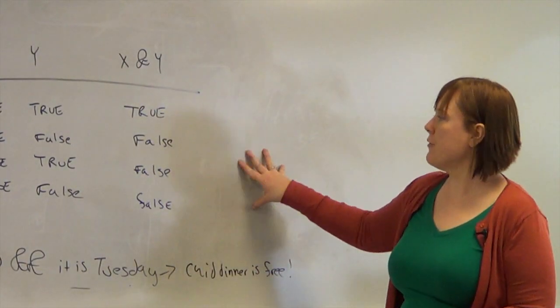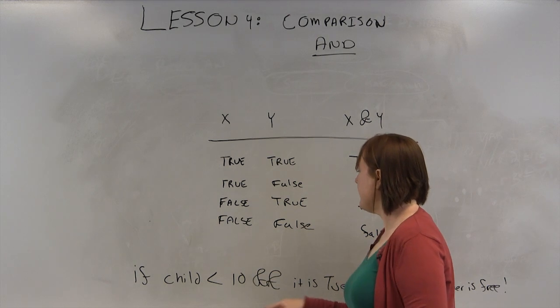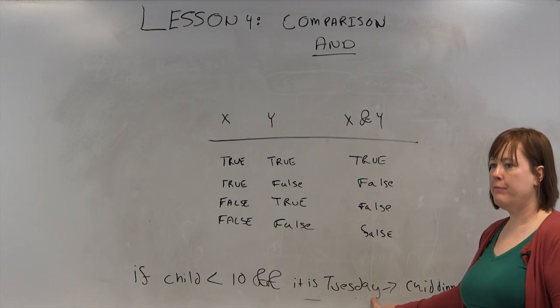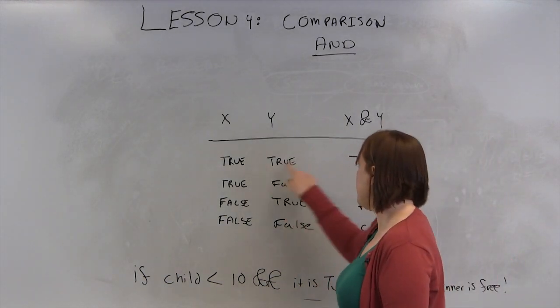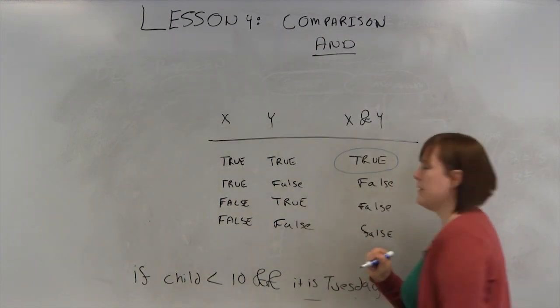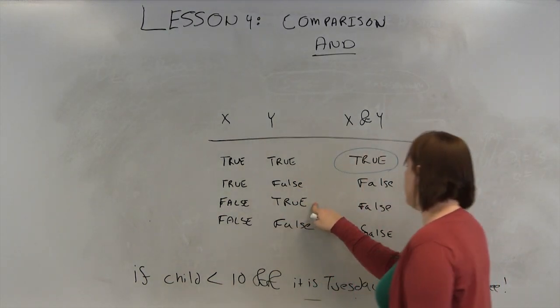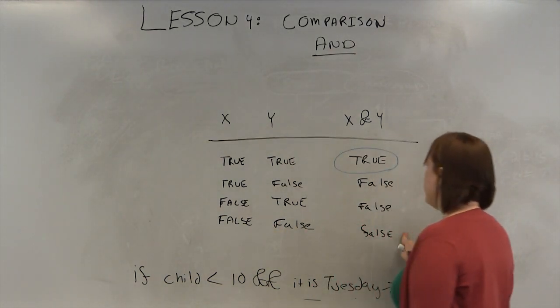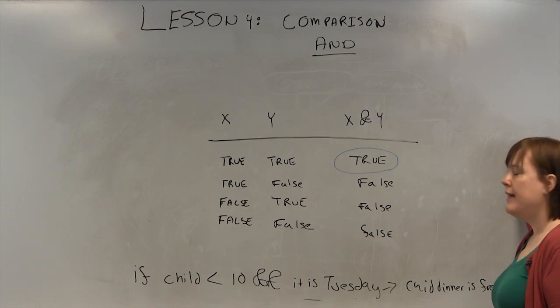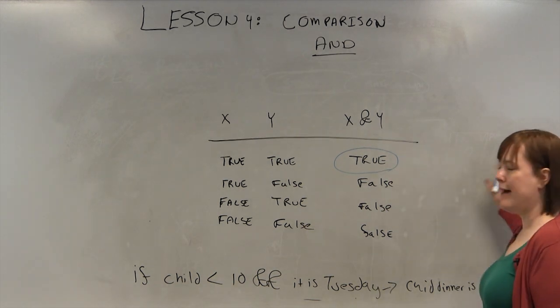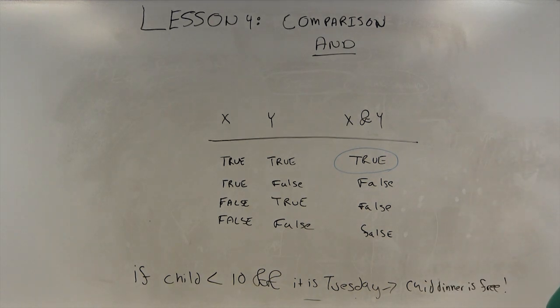Here's an example of a truth table for an and statement. We have variable x and variable y. In this case, we're going to say child is under 10, and it's Tuesday. And if both of those conditions are true, the child's meal is free that day. So in the first case, the child is less than 10, and it's a Tuesday. In which case, it's true, and the meal is free. If the child is less than 10, but it's Saturday, the meal is not free. If the child is 12, and it's Tuesday, the meal is not free. If the child is 12, and it's Friday, the meal is not free. Only when both statements are true will the combination statement be true. And it's common in more complex scenarios to actually draw out your logic like this to help you understand it. So that's what's called a truth table, and this is a very common example of how it would be used.